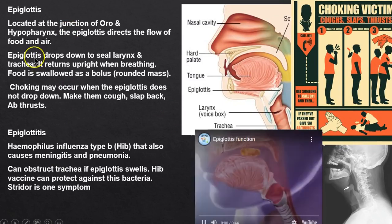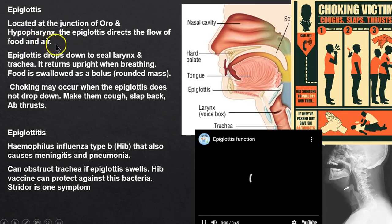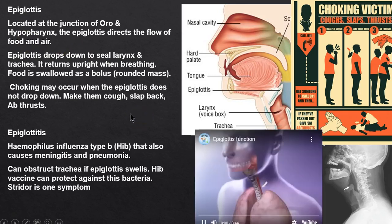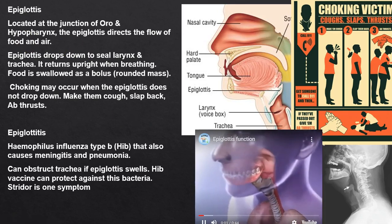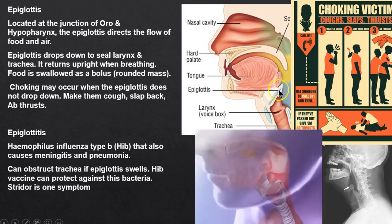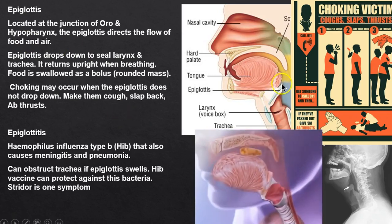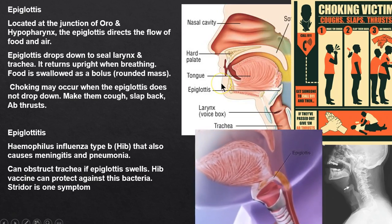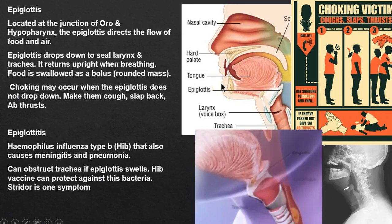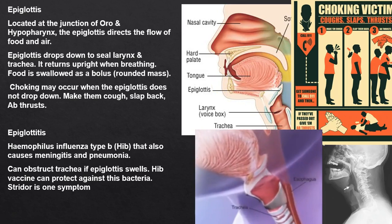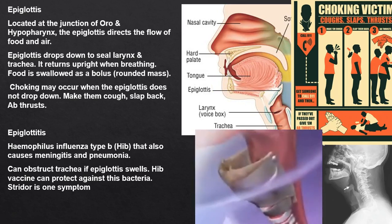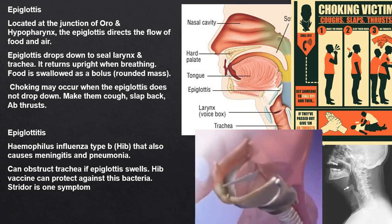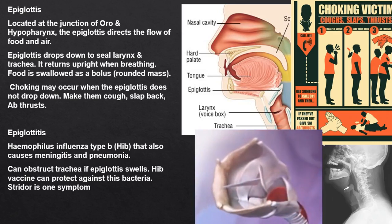I mentioned epiglottis — let's see a video of how it works. It's like a flapper in a tank. You're going to see that little epiglottis at the junction of the oral and hypopharynx. Watch — there's a bolus of food going into the esophagus. There is the epiglottis.